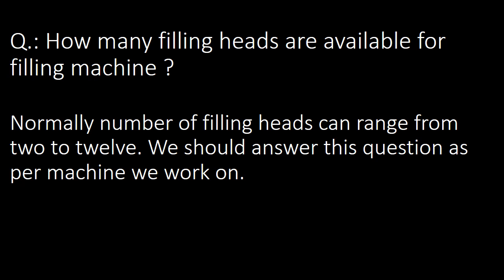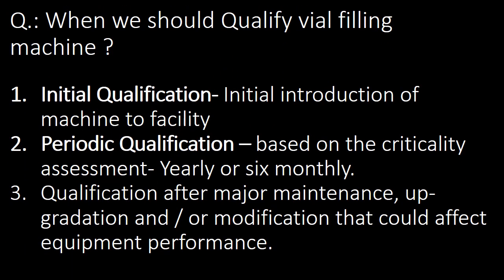Next question: when should we qualify a vial filling machine? There are three main cases. First is initial qualification — the initial introduction of the machine to the facility. Second is periodic qualification, done based on criticality assessment per plant-specific SOPs, normally yearly or six-monthly. Third is qualification after major maintenance, improvements, upgradation, or modification that could affect equipment performance.